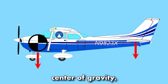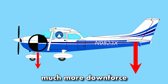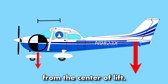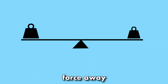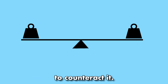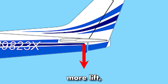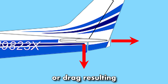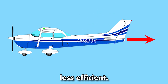When we have a forward center of gravity, the horizontal stabilizer has to create much more downforce to counteract the center of gravity, which is now much farther from the center of lift. It's a bit like a teeter-totter. When we move one downward force away from the fulcrum, we need more downward force on the other side to counteract it. Because the horizontal stabilizer is now creating more lift, it's also creating more induced drag, or drag resulting from the creation of lift. This increased drag makes the airplane less efficient.